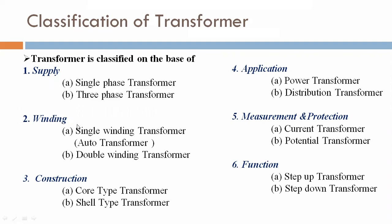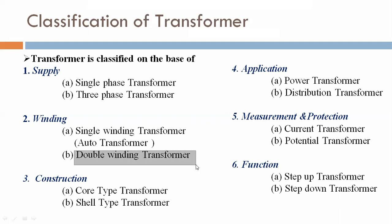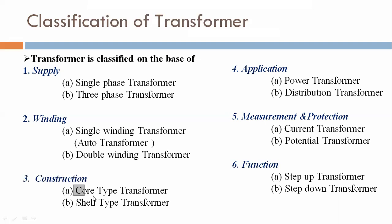Based on winding, a single winding transformer is called an auto transformer and it is used in laboratories depending on our utilization. A double winding transformer also depends on construction. Based on construction, the classification gives us first the core type transformer and second the shell type transformer.